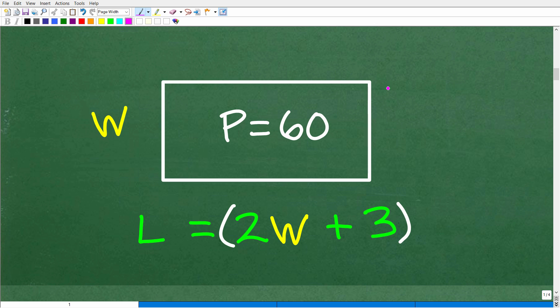But the one thing about rectangles, and this is very important to understand, is that the opposite sides of a rectangle are congruent. In other words, this side right here is the same measure as this side. This side is the same measure as this side.